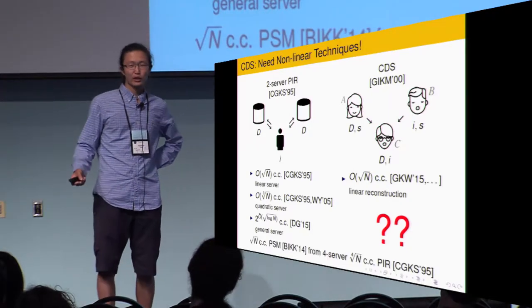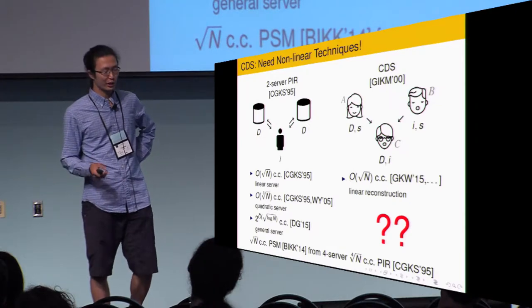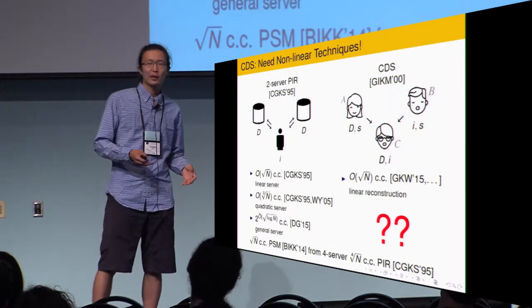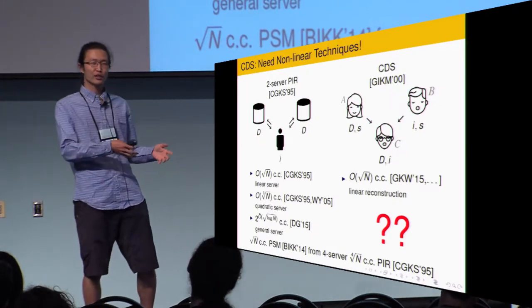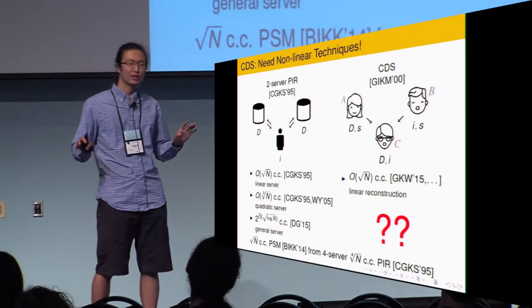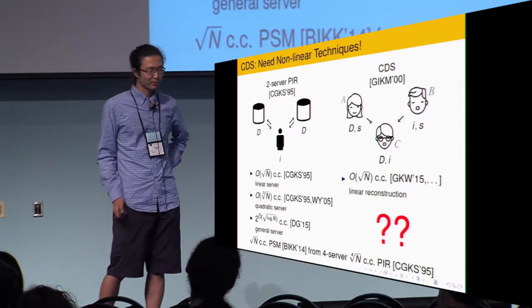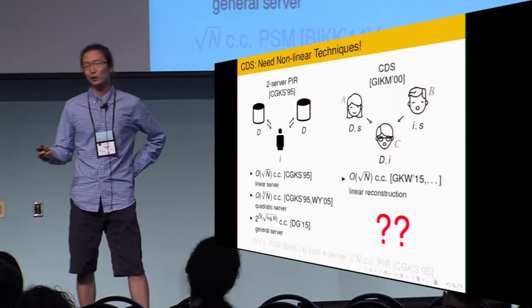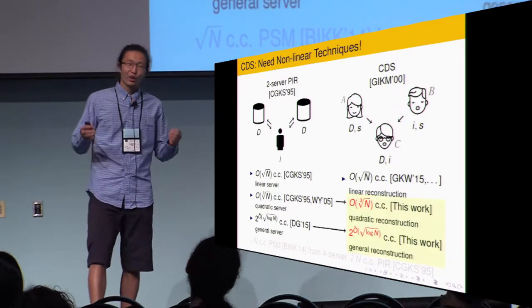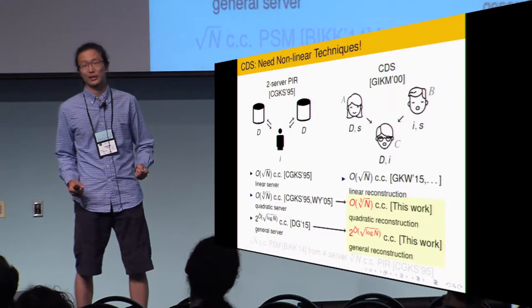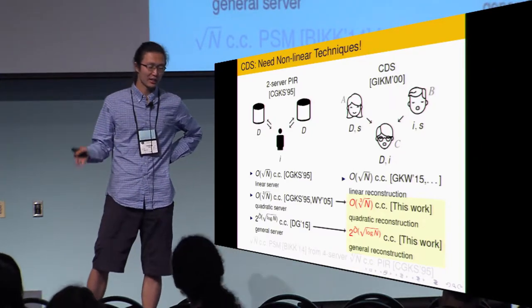But one big difference is that we have better scheme for PIR. For PIR, we have a cube root n communication complexity scheme. And also, recently, Dvir-Gopi, they construct the first subpolynomial communication complexity PIR. So, the natural question is that, can we import techniques from PIR to CDS? Beimel, Ishai, Kumaresan, Kushilevitz, they do something similar. They import technique from four-server PIR to PSM. PSM is kind of similar to CDS.